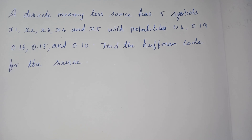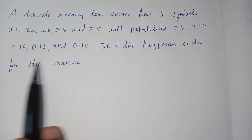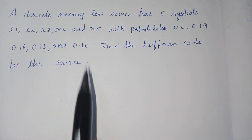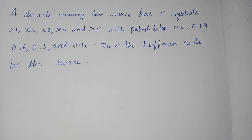Greetings. In this video lecture, let's discuss a problem on Huffman code. The question is: a discrete memoryless source has five symbols x1, x2, x3, x4, and x5 with probabilities 0.4, 0.19, 0.16, 0.15, and 0.10. We are asked to find the Huffman code for the source.